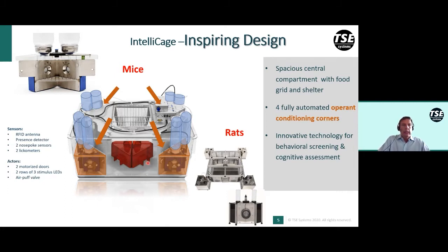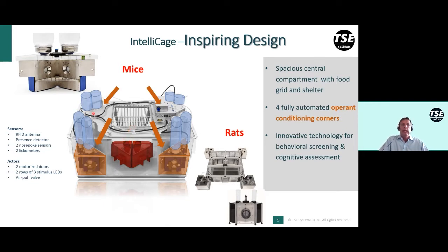In general, the IntelliCage consists of four operant conditioning corners equipped with sensors and actuators. Food is available freely in the food grid, whereas water or any rewarding solution can only be obtained in the operant conditioning corners.